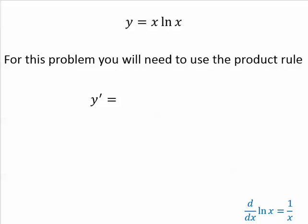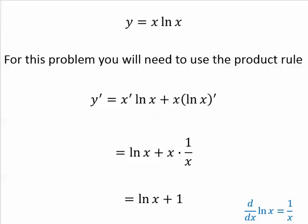For this problem, you're going to need to use the product rule. The derivative of the first times the second plus the first times the derivative of the second. The derivative of ln x is 1 over x. So I just clean it up and I'm done.